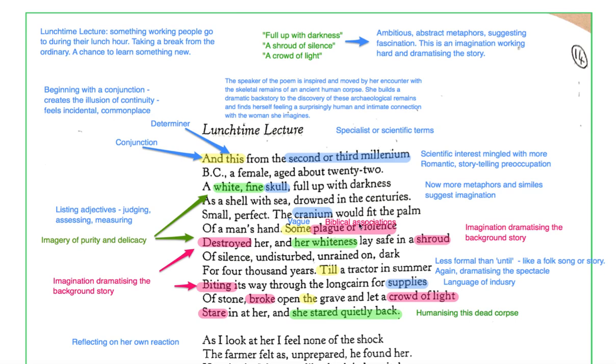Some plague or violence destroyed her. There's biblical associations to plague or violence. Book of Exodus, God sent a plague of locusts to torment the Egyptians. The Old Testament is full of plagues. It's just, it's debatable there, but there's possibly a biblical association there. But crucially, these are dramatic kind of features that she's imagining now and destroyed her, not killed her or caused her death, which you might expect from this scientific context of this lecture she's attended. But no, destroyed her. So dramatic language being used there, because she's imagining the fate of this woman.